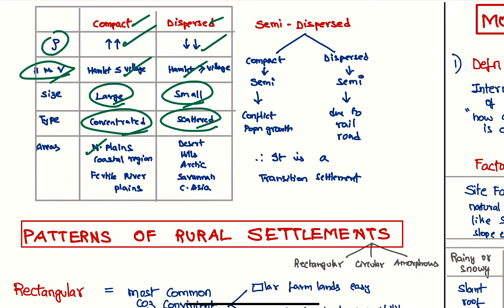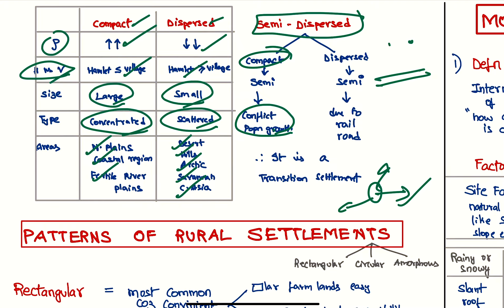These are generally seen in northern plains, coastal regions, and fertile deltas. These are seen in deserts, hills, antarctic, savannah, and central Asia. Coming to semi-dispersed: if a compact settlement because of conflict or population growth, people are moving away from the compact settlement, it can become a semi-dispersed settlement. Or if a dispersed settlement because of road or something, people are coming and aggregating here, it can become a semi-dispersed settlement. So this is a transition settlement.